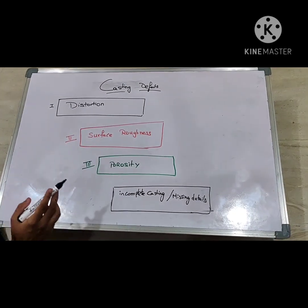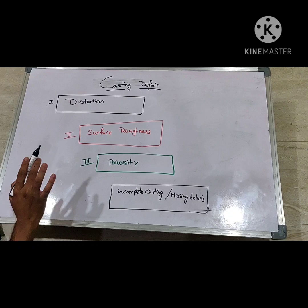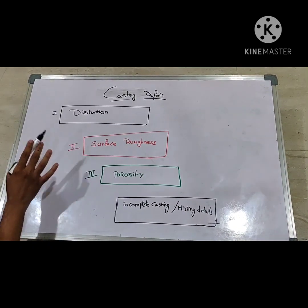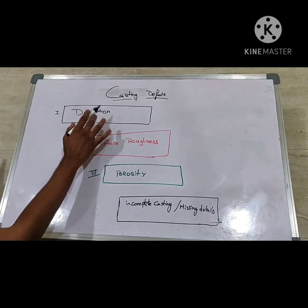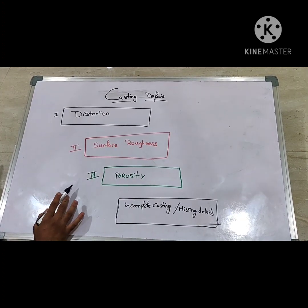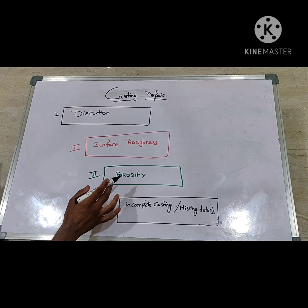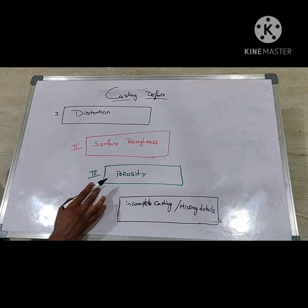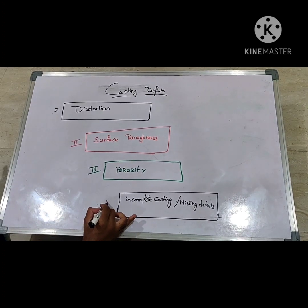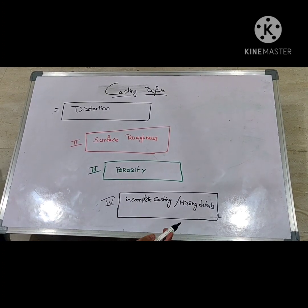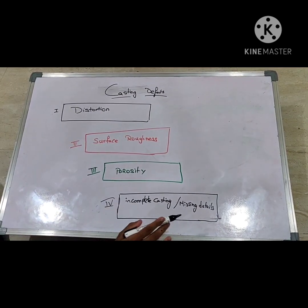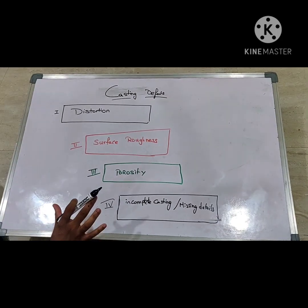The basic classification of casting defects: casting defects can be classified into four major types. Number one is distortion of the casting. Number two is surface roughness. Number three is porosity — this is the area where most students get confused. And number four is incomplete casting or missing detail.